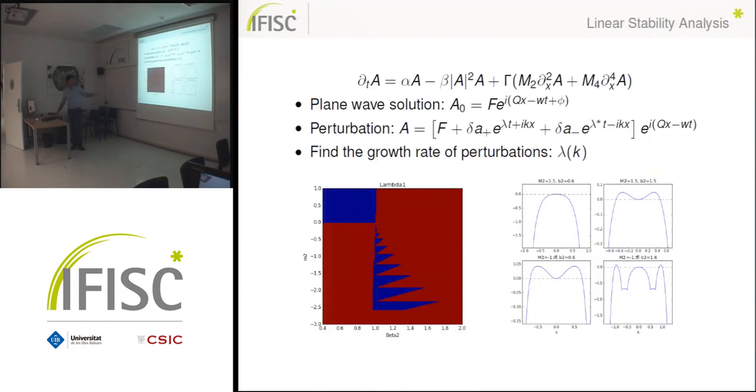So we repeated the process and made the linear stability analysis of the plane wave solution in the new variation and found this stability diagram for the plane waves, taking as parameters M2 from the moment expansion and beta 2 again. And found that this is the region of stability for plane waves. Here we have the growth rate for the different quadrants. And have that for this one we have stability, for these two we have turbulence, and for this last one we have something special which is a pattern formation.